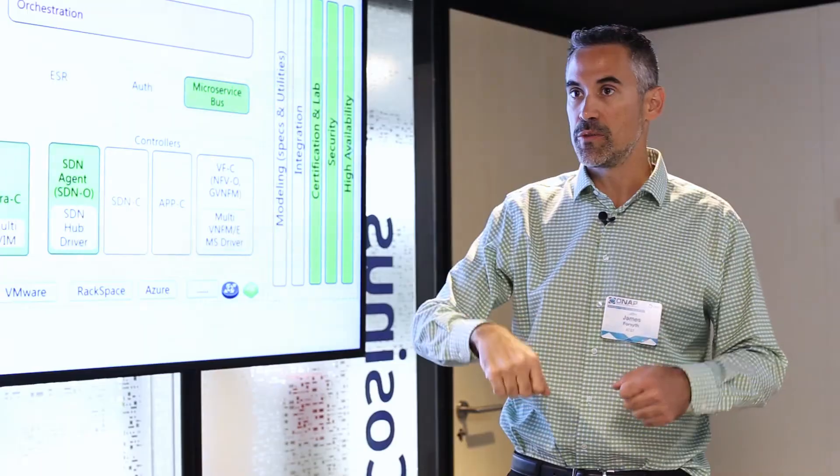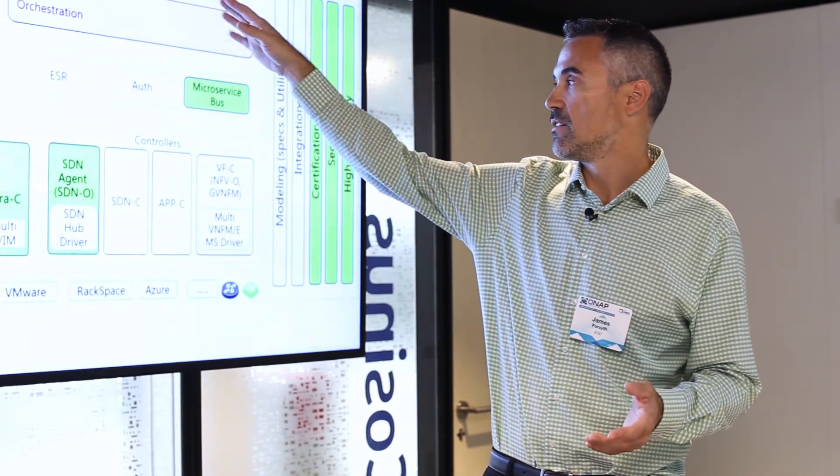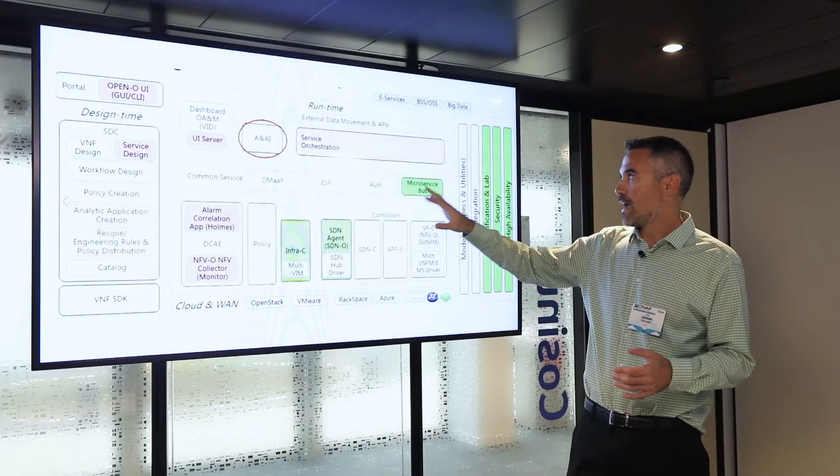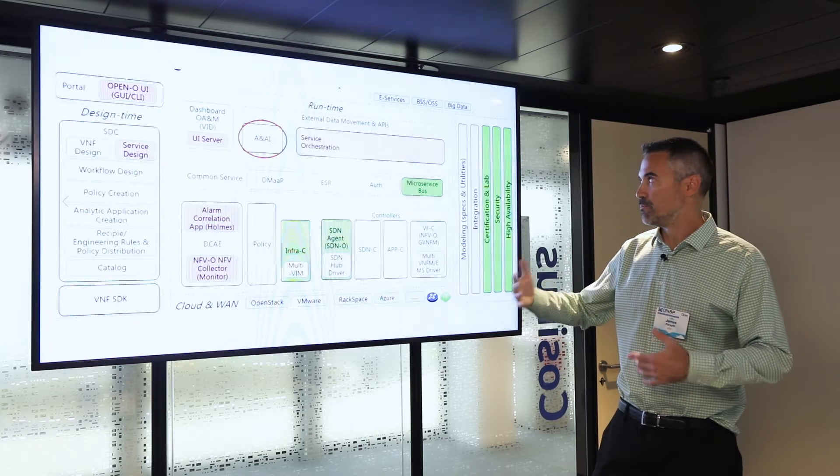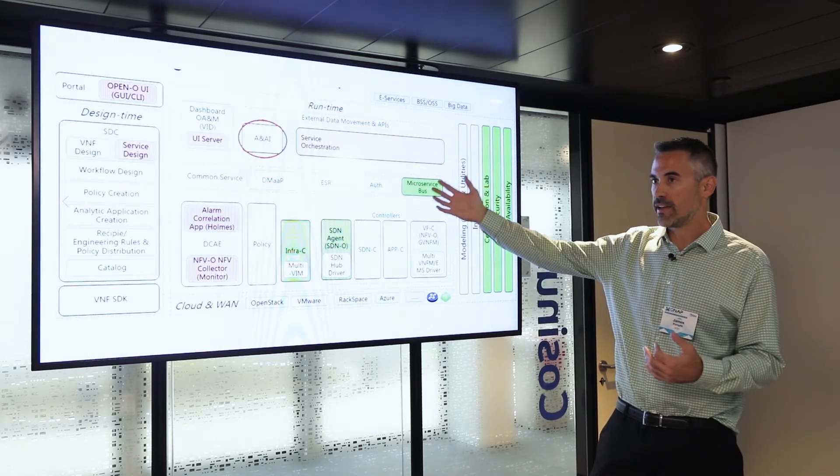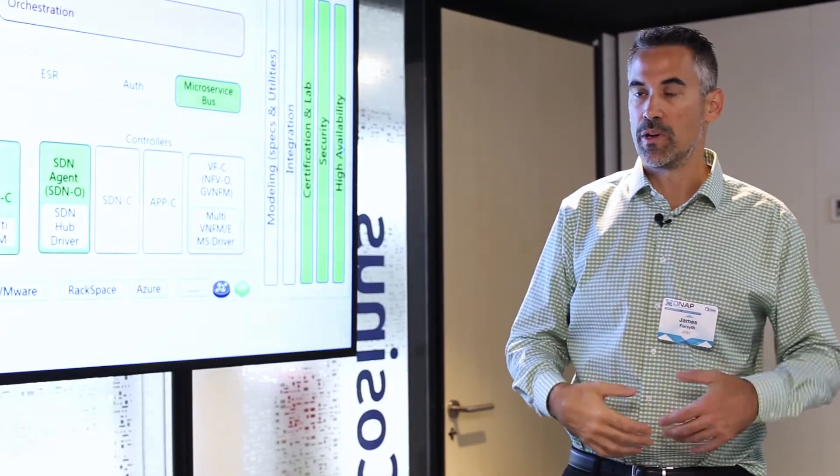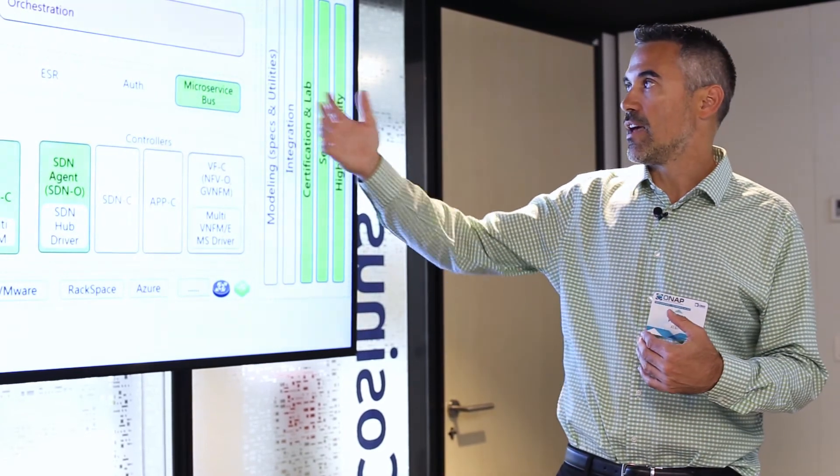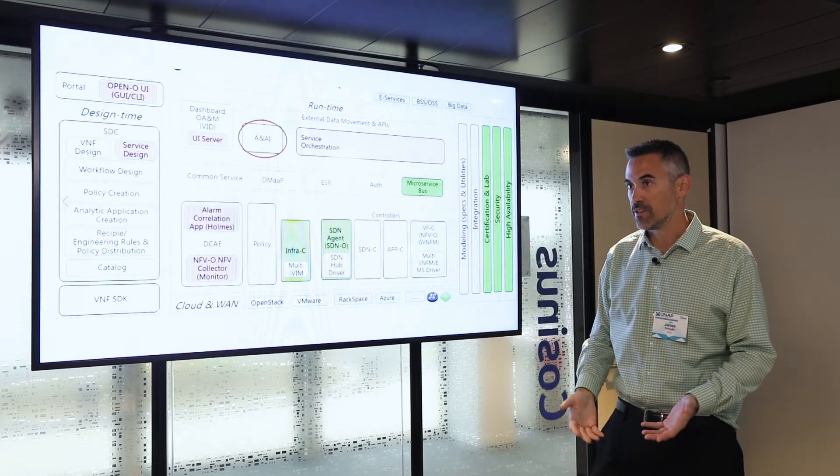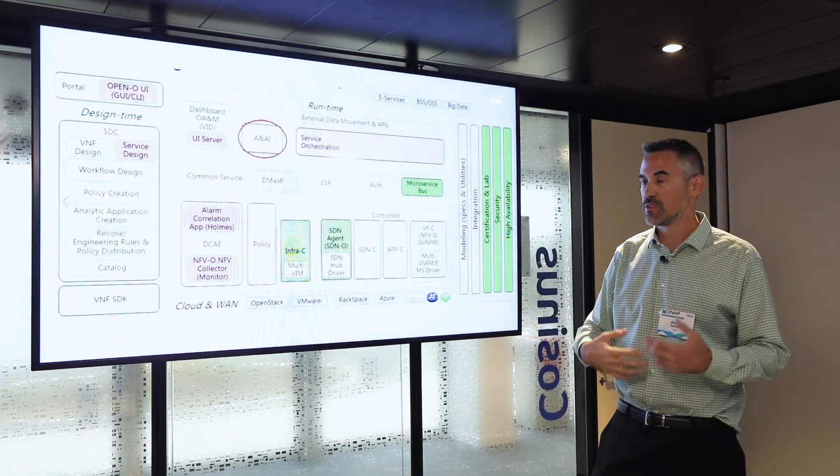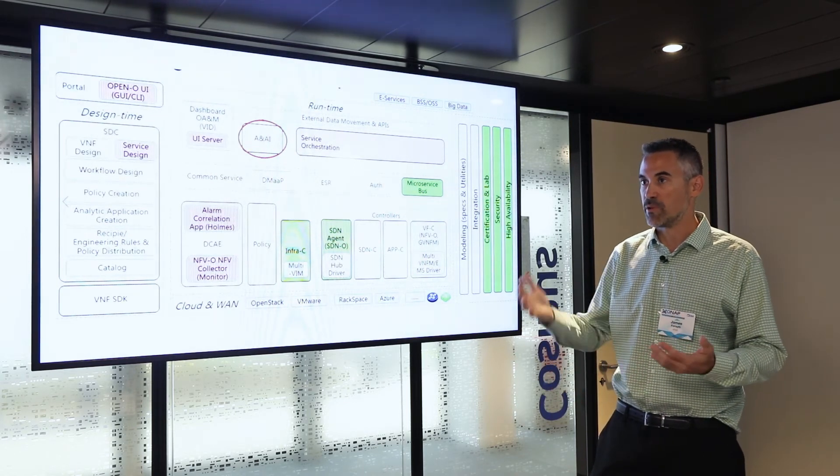The user then chooses the service type or the VNF or the VF module and then that kicks off the request to SO. So as VID and SO work together to build the service, they interrogate ANEI to find out what's currently provisioned for that customer and then make decisions about what is possible to add to it. What kind of VNFs, what kind of services, what kind of networks will be allowed to be provisioned based on the common model and the data that's in ANEI.